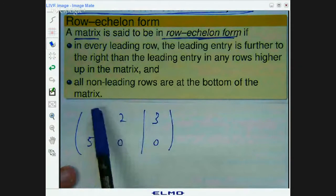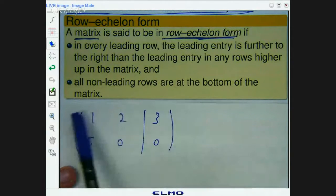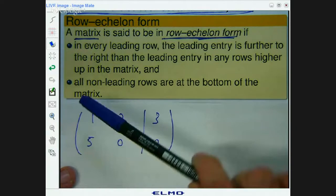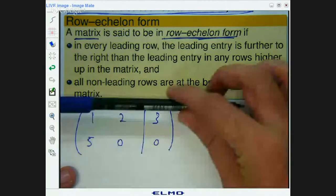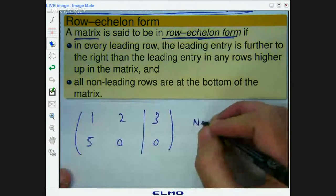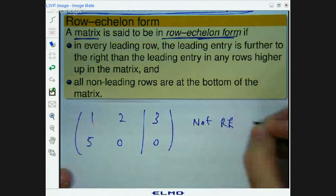Now that's the first non-zero entry in row one. So that's the leading entry. That's the leading entry in row two, but we're not moving to the right as we go down our rows with our leading entry. So this is not in a row echelon form.